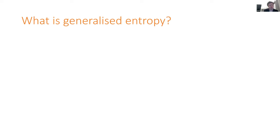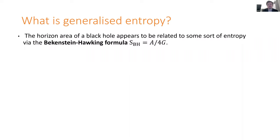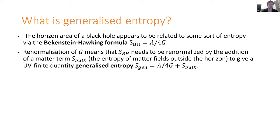The heart of all of these papers is the idea of generalized entropy and trying to understand it better. We've known for 50 years now that the horizon area of a black hole is in some way related to entropy by the formula S equals A over four G, due to Bekenstein and Hawking. But G here is presumably some bare Newton's constant that needs to be renormalized, so this quantity doesn't make sense on its own — it's not UV finite. The way we renormalize it is to add entanglement entropy of matter fields outside the horizon, giving the UV finite quantity called generalized entropy: A over four G plus this bulk matter entropy outside the black hole horizon.